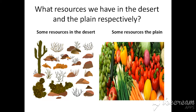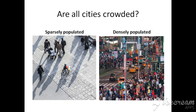So people prefer to live here because of the resources. Now this city is sparsely populated — we don't have a big number of people. When we don't have a big number of people in a city, we say it's sparsely populated. And this city is densely populated because we have a lot of people living here, so we say that it's densely populated.